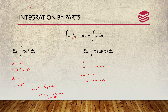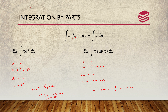Putting this together, you get u times v: x times negative cosine of x, minus the integral of negative cosine of x dx. Pulling out the negatives and solving through, you get negative x·cos(x) plus sin(x) plus C. That is the answer, and that is integration by parts.